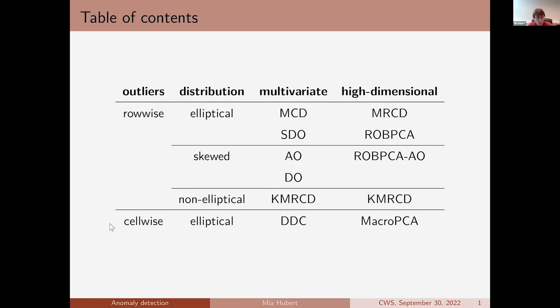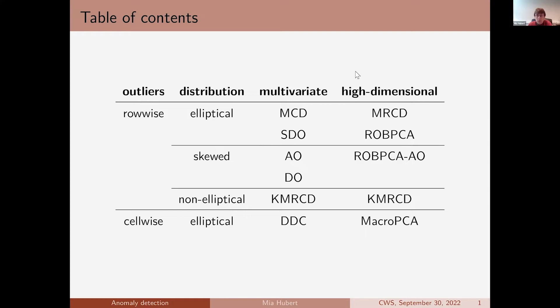Most of the work so far has been done on row-wise outliers, and my own research is mostly concerned with that. I'll explain on the next slide what the difference is, and I will also talk a little about cell-wise outliers. Within the row-wise setting, I will discuss different types of distributions: what if data are elliptical, what if they come from a skewed or non-elliptical distribution, and settings where data are multivariate or high-dimensional — whether p is larger or smaller than n.